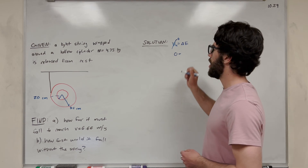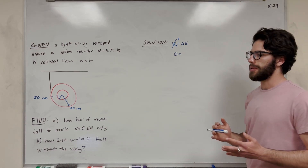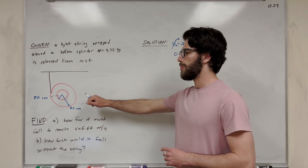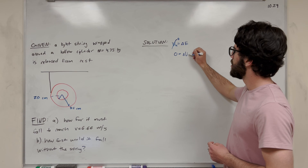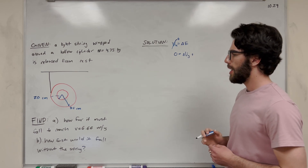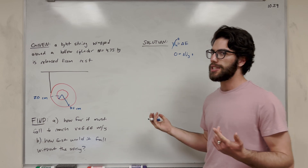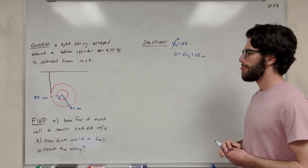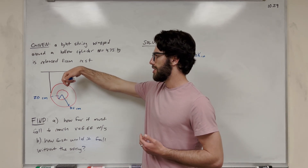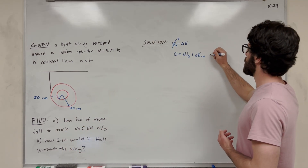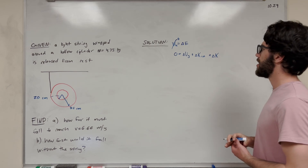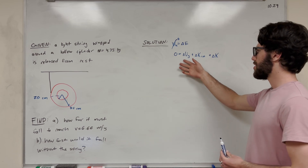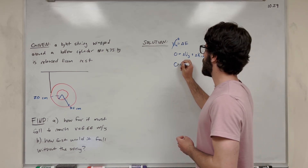So now we have zero equals the change in energy. Let's think about what energies are in our system. We know we're falling a height, so we'll have change in gravitational potential energy, delta UG. We're also rotating, so we'll have change in rotational kinetic energy, K-rotational. And the hollow cylinder is falling straight down, so it will also have linear kinetic energy. There are no springs, so that should be everything.